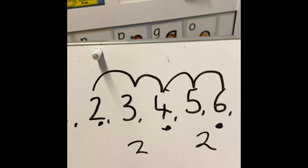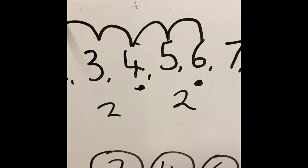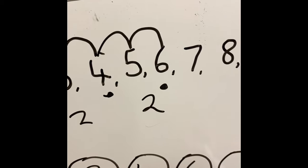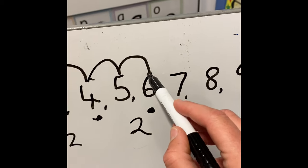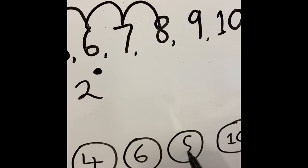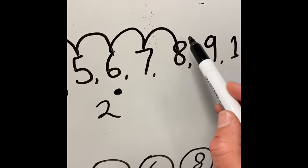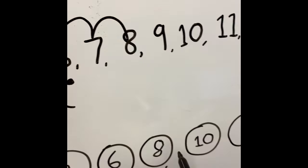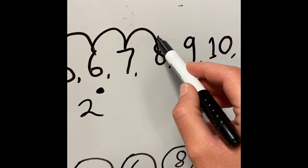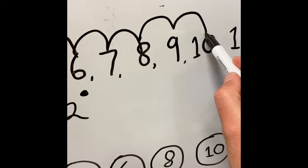So far we know that to get from two to four it's two. From four to six it's two. From six to, let's count. One, two. Let's try eight. To make a jump from eight to ten that we already know is there, it should be two if it's following our pattern. One, two. It is.